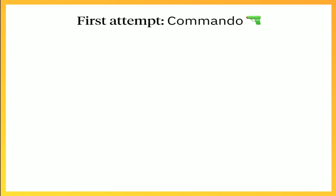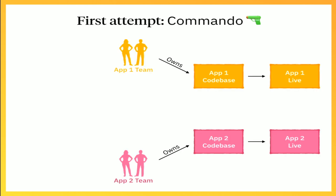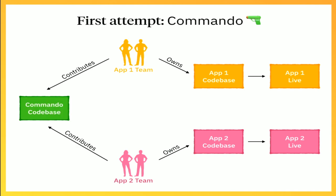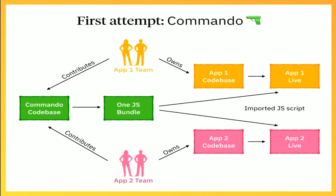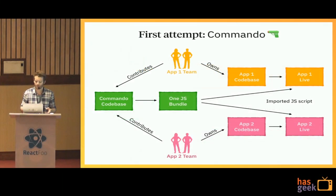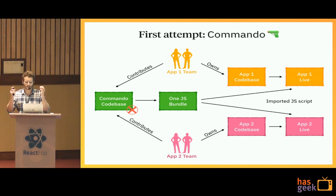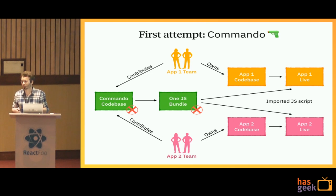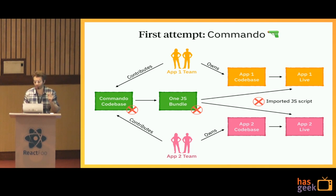Our first attempt was named Commando. The setup: one team working on one website, another on a different one, but they need to share a component. We created a common codebase called Commando where both teams contributed, and output a single huge JS bundle served directly as a script downloaded by the websites. The problem was the codebase grew without specific architecture, components didn't follow the same syntax, the bundle was huge, and there was no versioning strategy — pushing breaking changes would break websites.